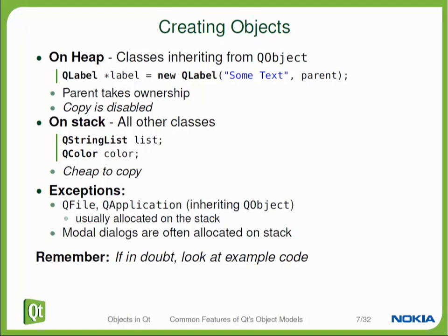There are some exceptions, though. Some classes that inherit QObject are usually created as local variables. A typical example is dialogues. If you're creating a QFileDialog to choose a file in the file system, this dialogue is usually created in the function where it's shown and destructed at the end of that block. If you're unsure about how to do this, the best way is probably to look at example code. There are many examples in Qt and in the reference documentation.